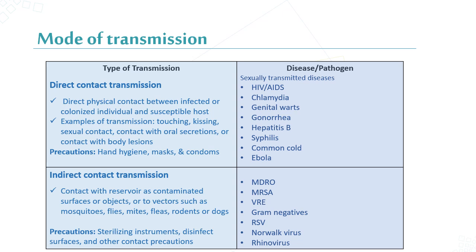Indirect contact transmission occurs through contact with contaminated objects or vectors such as mosquitoes. Key examples include MDROs such as MRSA, VRE, and Gram-negative organisms, which can be transmitted via contaminated surfaces or equipment.